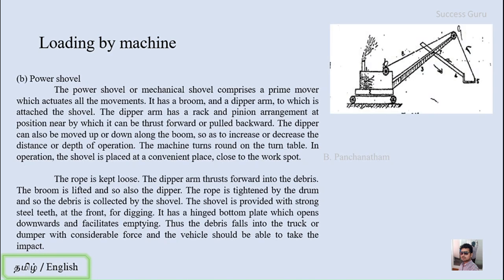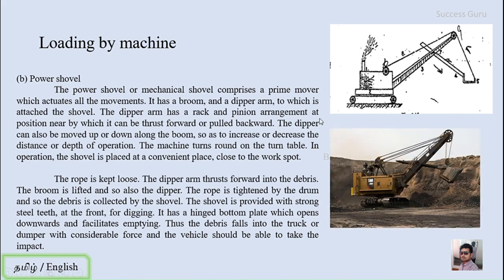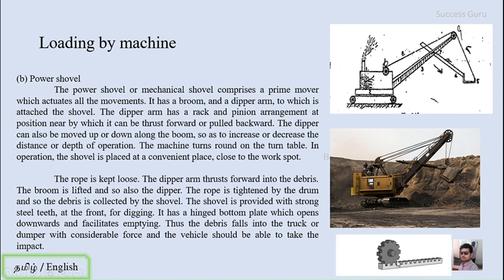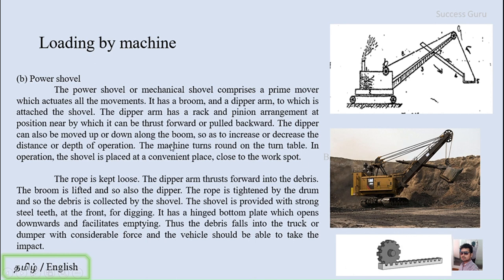Now we are going to see the second loading machine, which is the power shovel. You can see this is the actual machine in the field. The power shovel or mechanical shovel comprises a prime mover which actuates all the movements — this prime mover controls all operations of the vehicle. The dipper arm has a rack and pinion arrangement, which is used to give thrust to the power shovel, to push it towards the ground or into the debris.